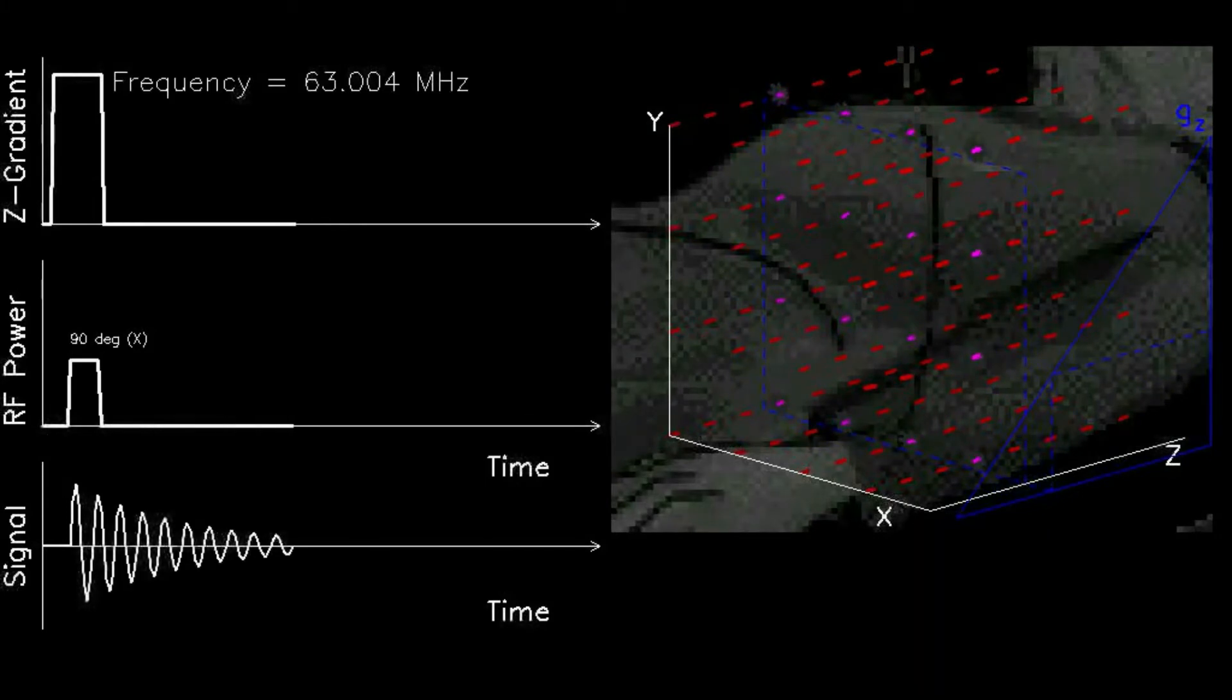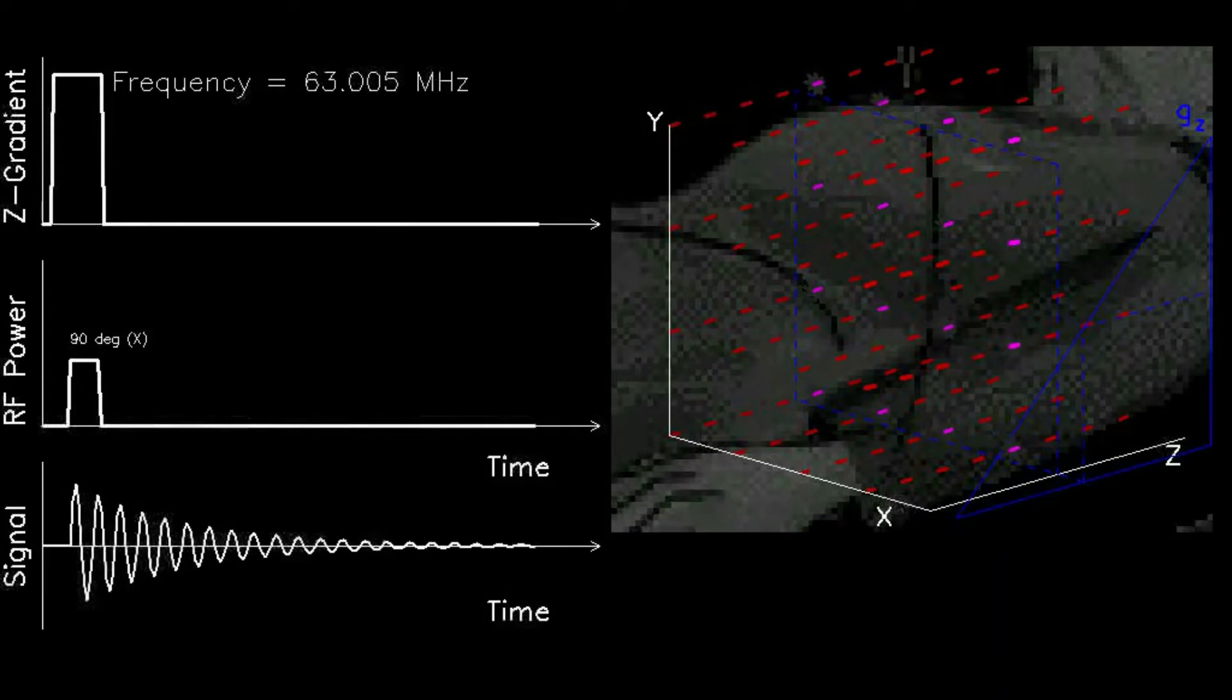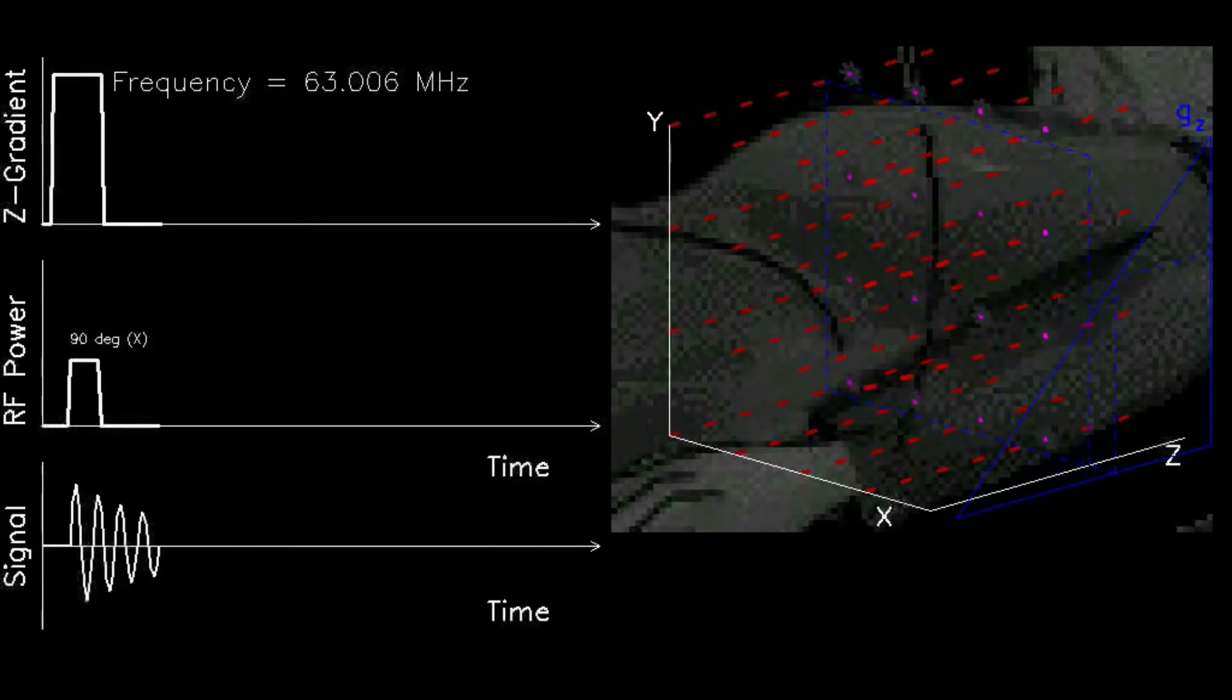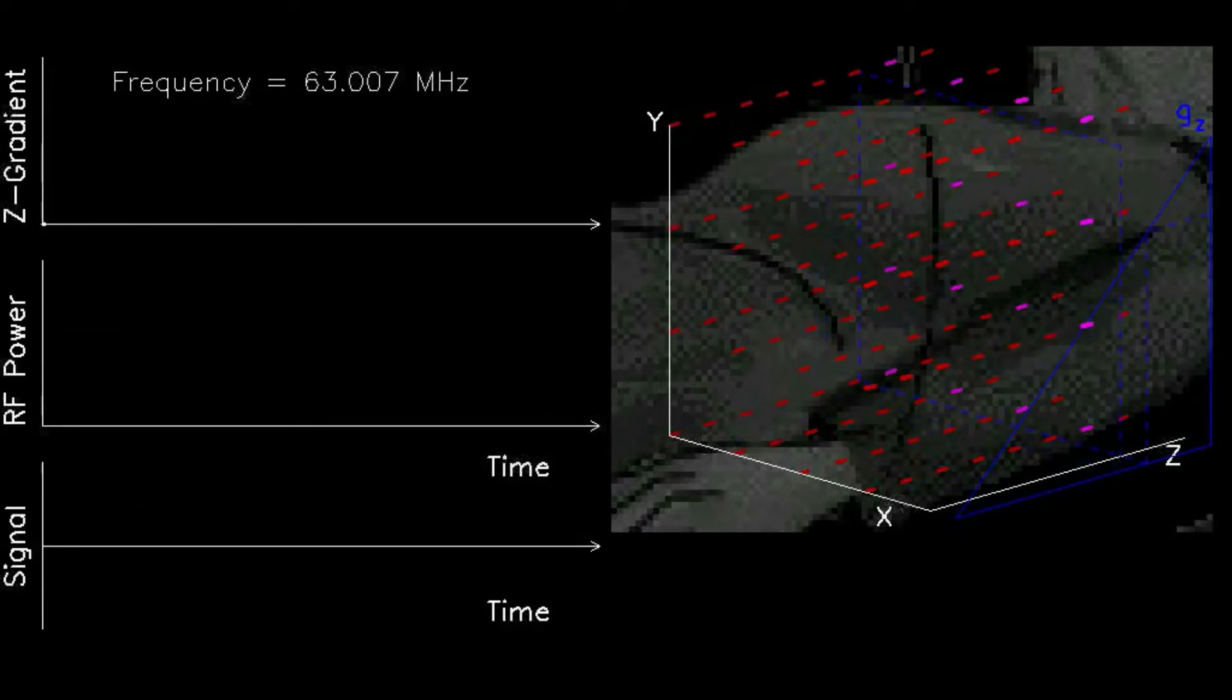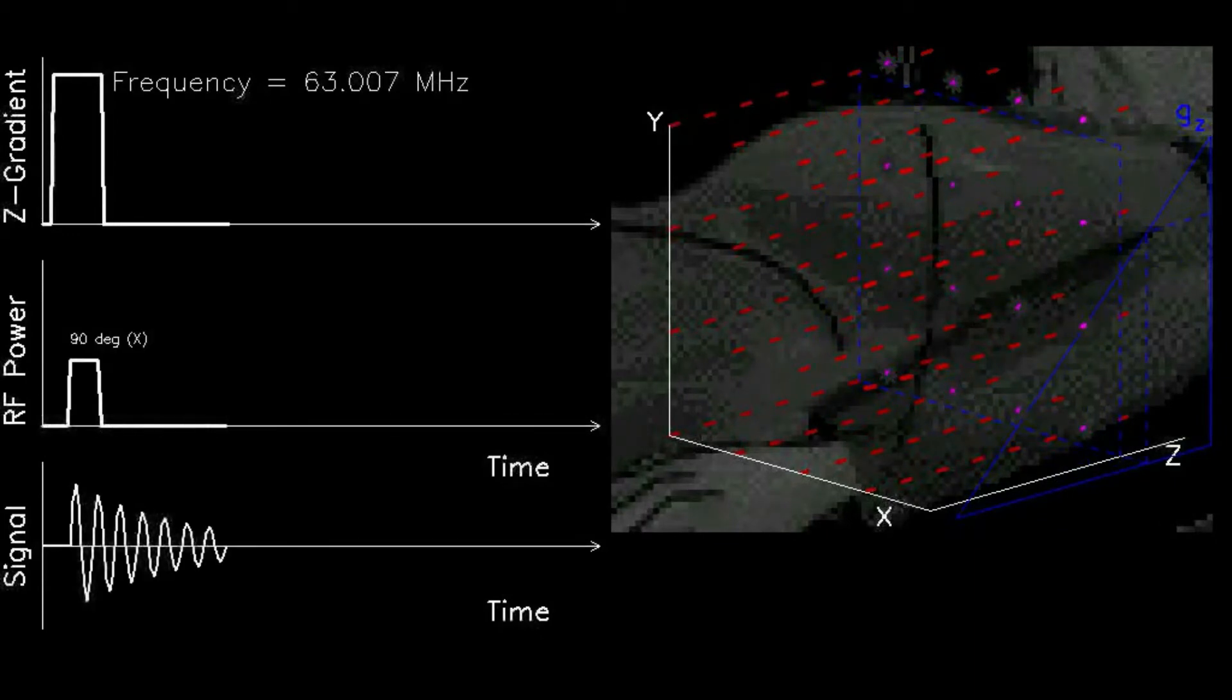Here we use the strategy of divide and conquer to reduce the problem from three dimensions to two. To do this, a small additional magnetic field with a known gradient is briefly added to the main static magnetic field. The gradient is such that when the patient lies in the scanner, the total field at the head is slightly larger than the field at the feet.